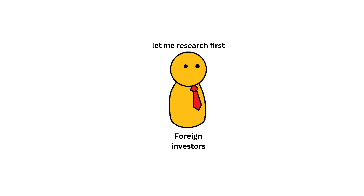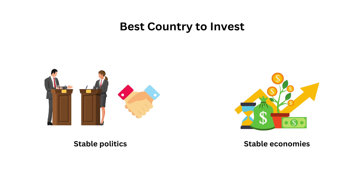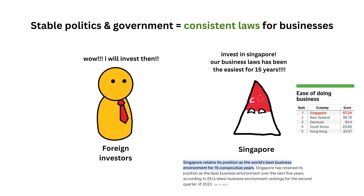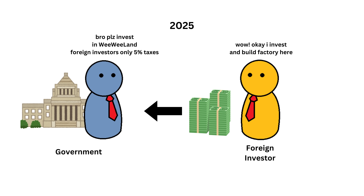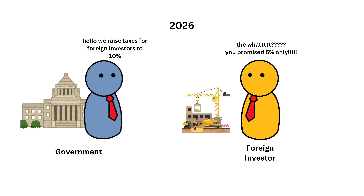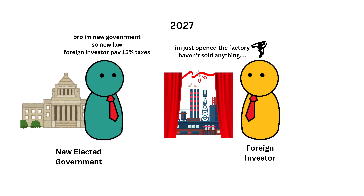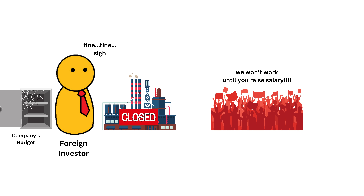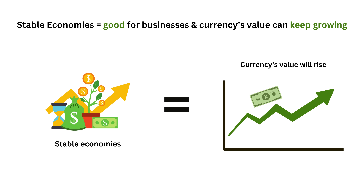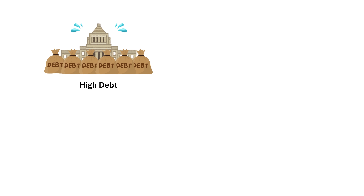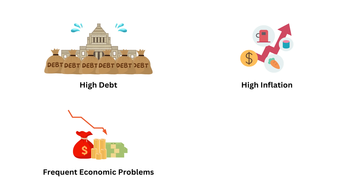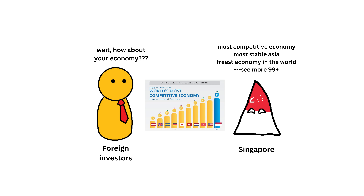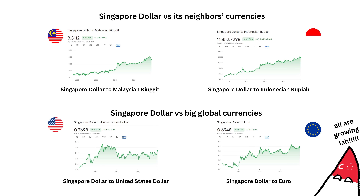That's why almost all countries promote their countries to foreign investors and lure them to invest and do business there. But foreign investors won't just invest in any country. They look for countries with stable politics and economies. A stable government means consistent rules and laws for businesses. For example, if a country promises low taxes to attract foreign businesses, but then suddenly raises taxes, it becomes more expensive for those businesses and they could lose money. If a country keeps changing its rules, businesses won't feel safe investing there. Similarly, if there are lots of protests or strikes, it can disrupt production. A stable economy also means the country's money is less likely to lose value suddenly. So, a stable country is more attractive for investment, which helps keep its currency strong.